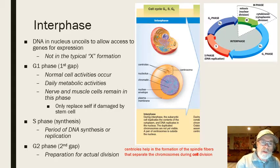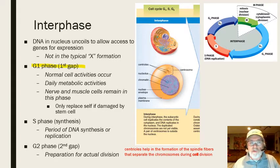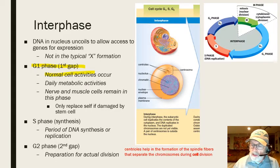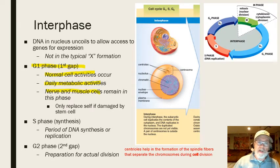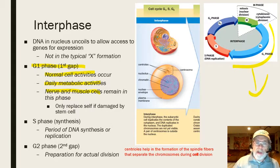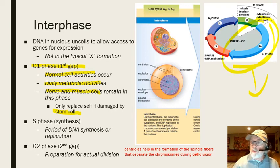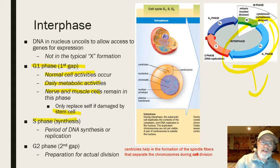The G1 phase stands for 'gap one' or 'first gap.' This is when normal cell activities occur — daily metabolic activities. Nerve and muscle cells — those differentiated cells — never leave this phase. They stay in G1 for their entire lifetime. If something is damaged, stem cells go to that area to make new cells. That's called the G1 phase. The S phase is the period of DNA synthesis or replication.